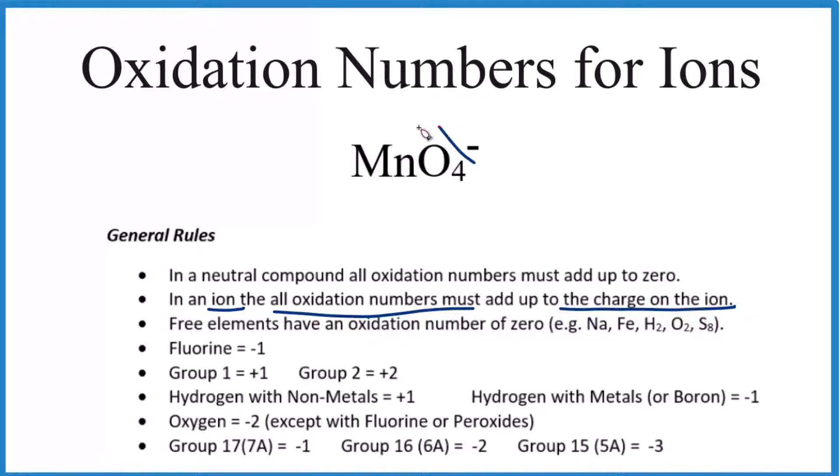So the charge on this ion right here, the whole thing, is 1 minus. So all the oxidation numbers have to equal 1 minus. So we could just write an equation. We don't know manganese, that's a transition metal, but we do know oxygen is negative 2, with just a few exceptions. So we'll add, we have four oxygens, each one is negative 2, and then that's all going to equal the charge on the ion here, which is 1 minus. So we'll just write minus 1, since now we're talking about oxidation.